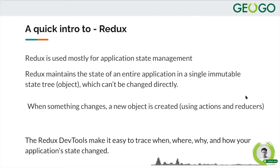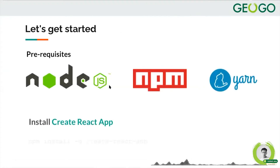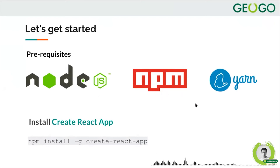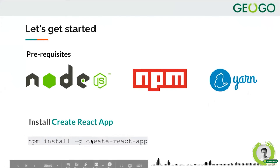To get started developing in React, you need three things installed. One is Node.js — you need to have Node.js installed in your system. Another is npm, the Node Package Manager, or you can use Yarn, which is a package manager created by Facebook. To start, you need an npm library called create-react-app.